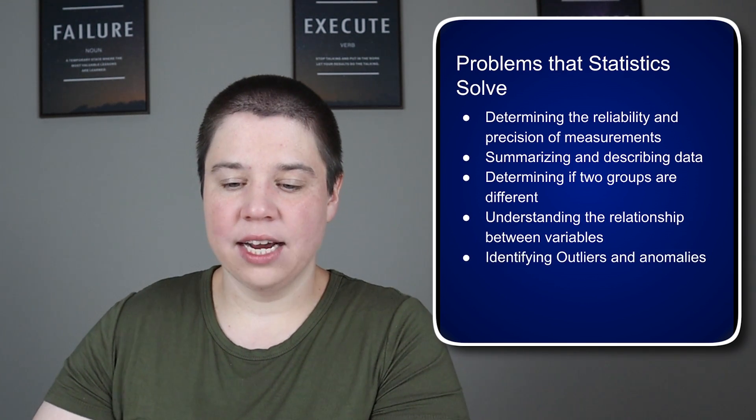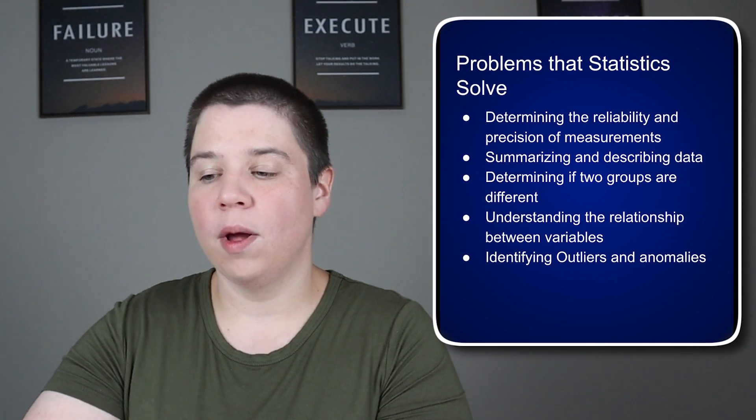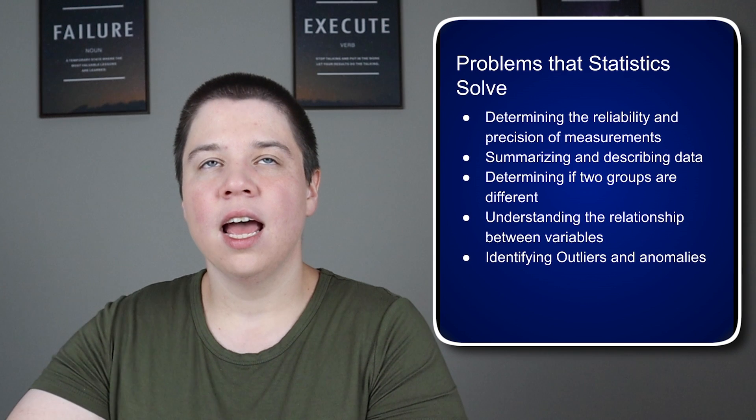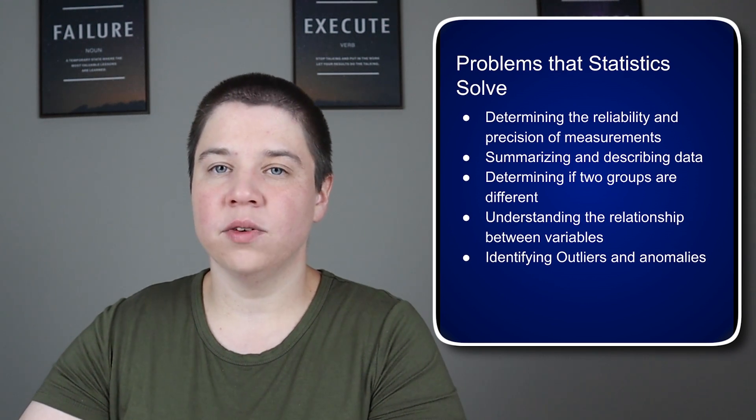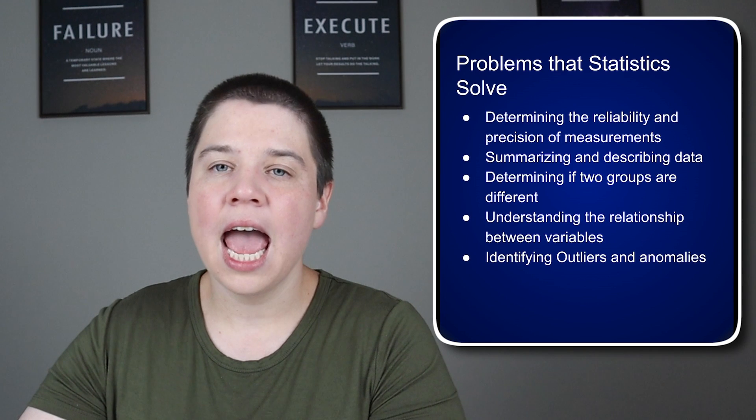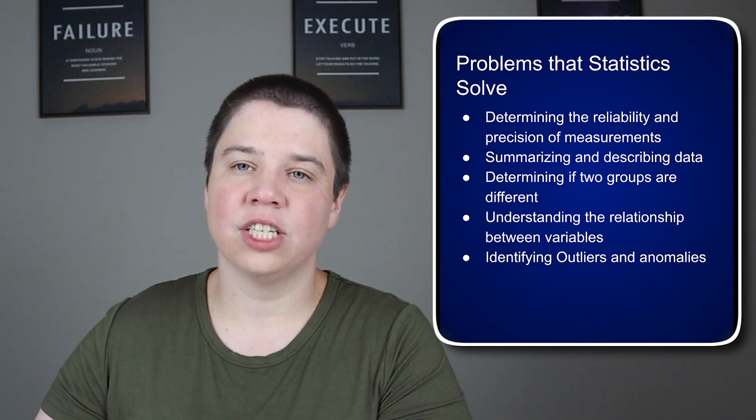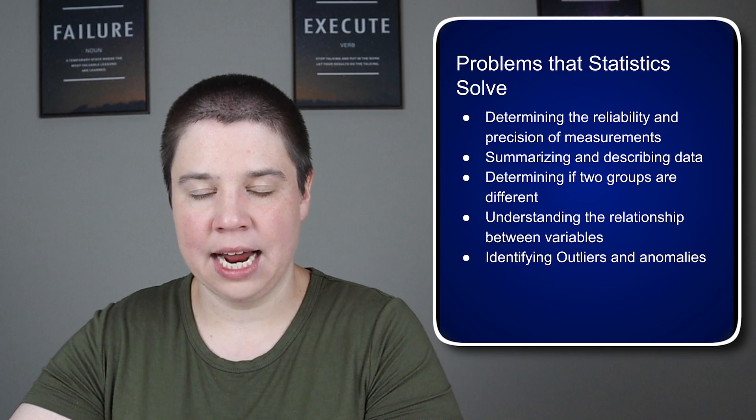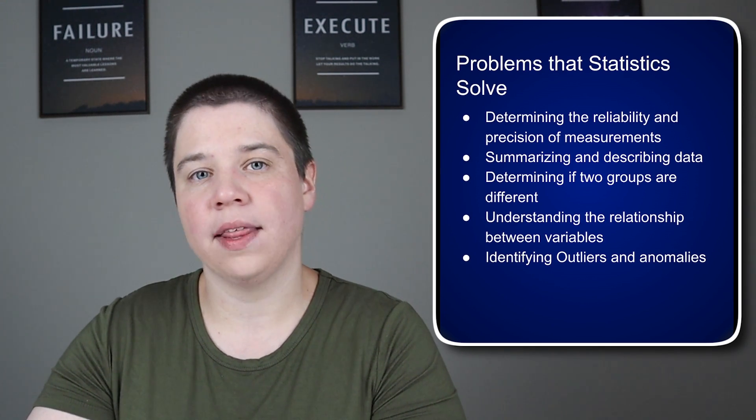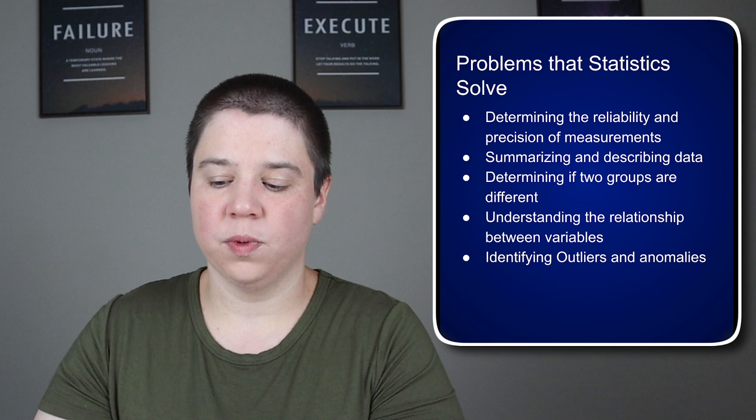Identifying outliers and anomalies. So whenever we're collecting data, we might think that one point seems really odd. And so we can use statistical tests to determine if that point is mathematically an outlier. And then we use practical knowledge to determine if it actually makes sense to include that as an outlier. Is there an explanation for why that point would be an outlier? And is it representative of the population we're studying?